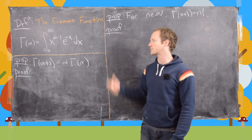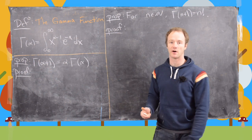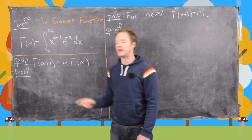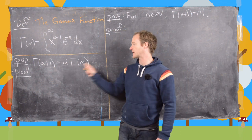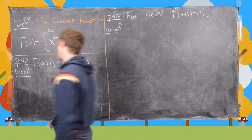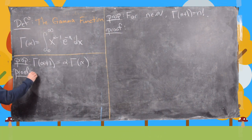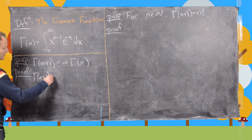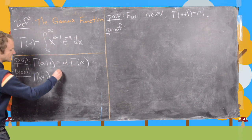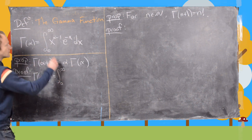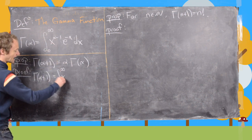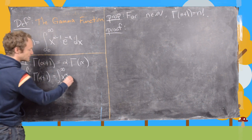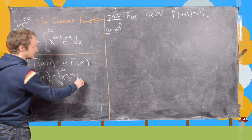In this video I want to prove two basic propositions involving the gamma function. The first one is: gamma evaluated at alpha plus 1 equals alpha times gamma of alpha. For the proof, we take gamma of alpha plus 1 and by the definition this is the integral from 0 to infinity of x to the alpha, times e to the minus x, dx.